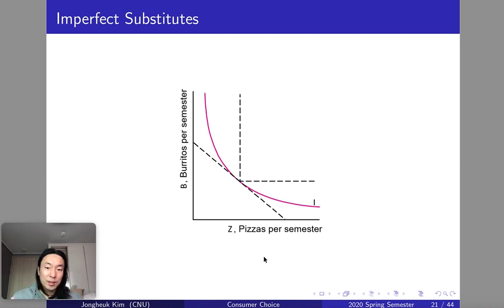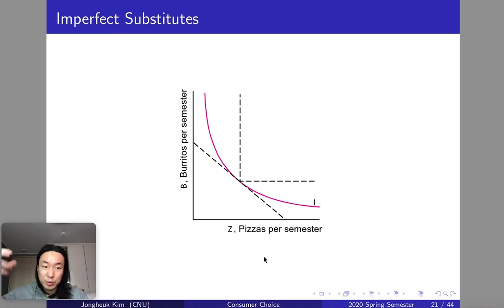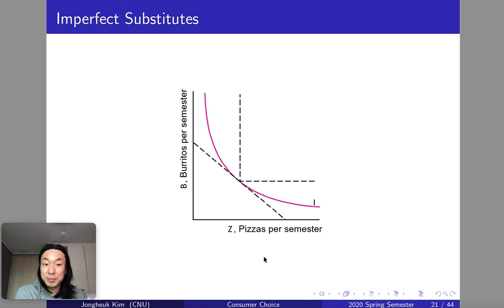Imperfect substitutes means there is still some substitution effect between the two goods but they are not perfectly substituting each other. You can still consume both and improve happiness, but since your income is limited, choosing one means giving up some of the other — which is measured by the MRS, calculated as the slope of the indifference curve.